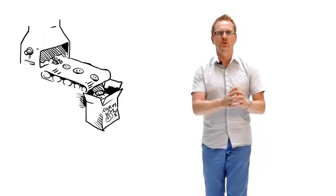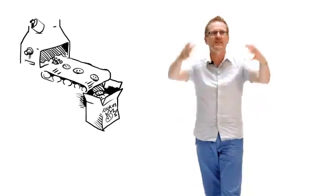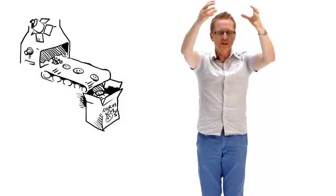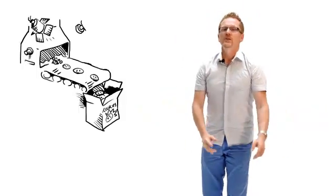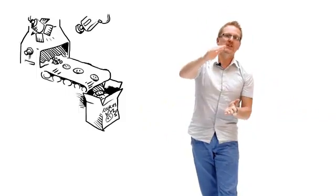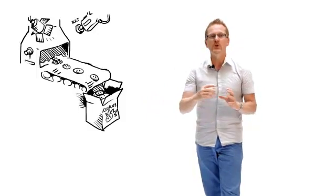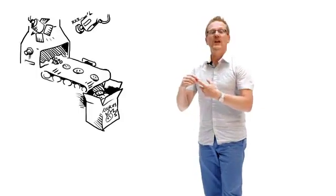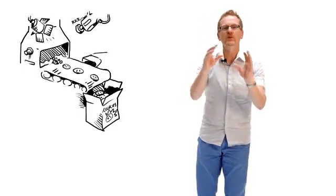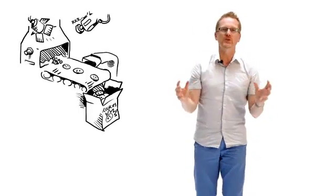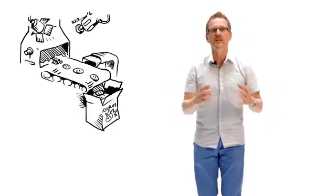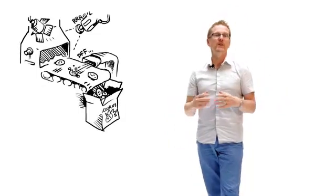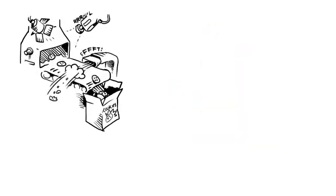That is also a quite expensive solution because you need to pay this person sitting there behind the conveyor belt. So instead, we teach a camera to understand what it can see — to interpret the information coming from the pixels. We place the camera on top of the conveyor belt, viewing down and observing the cookies as they pass by. We then compute features such as color, size, and roundness, and based on those features make a decision whether cookies are accepted or blown away by high-pressure air.